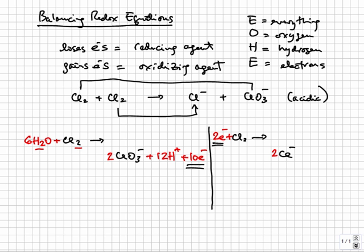Finally, we combine the two half-reactions together. To do this, the same number of electrons must be transferred. There are ten electrons in the first and two in the second, so we multiply the entire second half-reaction by five and add the two. The electrons should cancel. The balanced reaction is Cl2 plus 6H2O plus 5Cl2 going to two chlorate plus 12H+ plus 10Cl-.